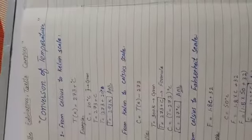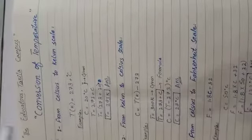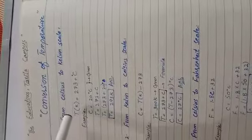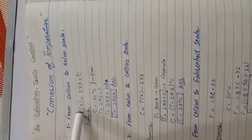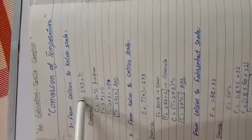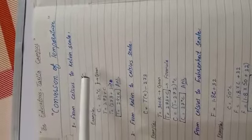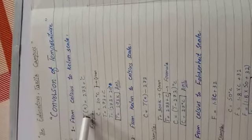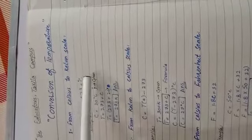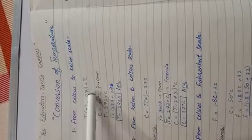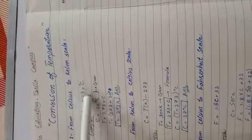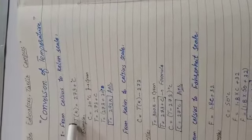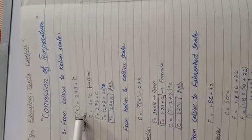First we will see how we change from Celsius to Kelvin scale. If you have the value in degrees centigrade and you need to change it to Kelvin, then you will add that value to 273, and you will have the final temperature in Kelvin.